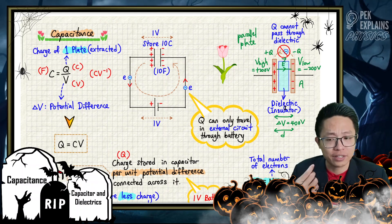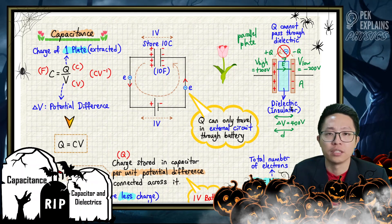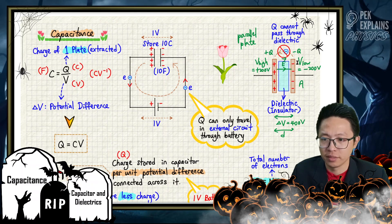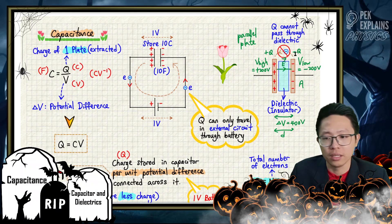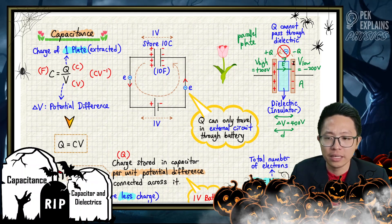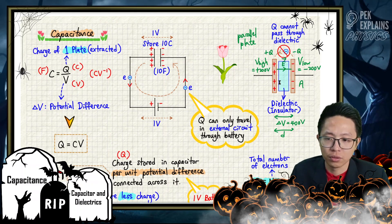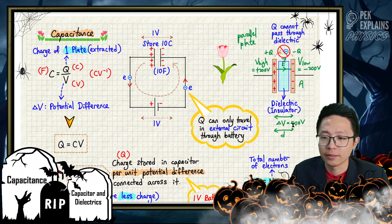Sometimes if the dielectric is being ionized — broken down by a very high voltage — the capacitor malfunctions. When the dielectric is ionized, electrons can easily jump over and the negative plate can neutralize the positive plate, so it cannot build up the potential difference.